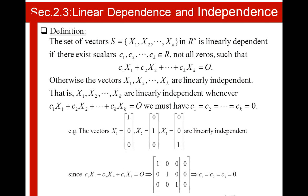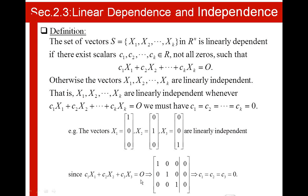For example, the vectors X1, X2 and X3 are linearly independent. These vectors are called the coordinate vectors. Since C1·X1 plus C2·X2 plus C3·X3 equals 0, we have C1 equal to C2 equal to C3 equal to 0, which fits very well into the definition.